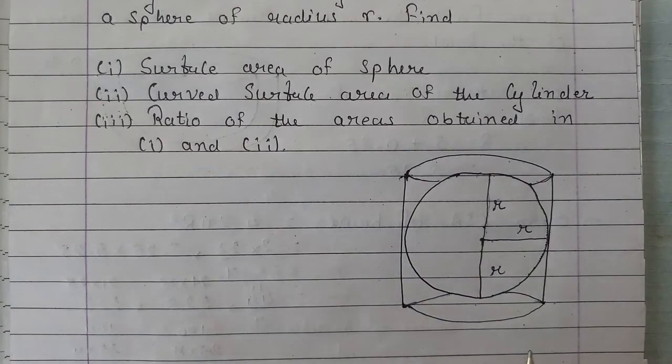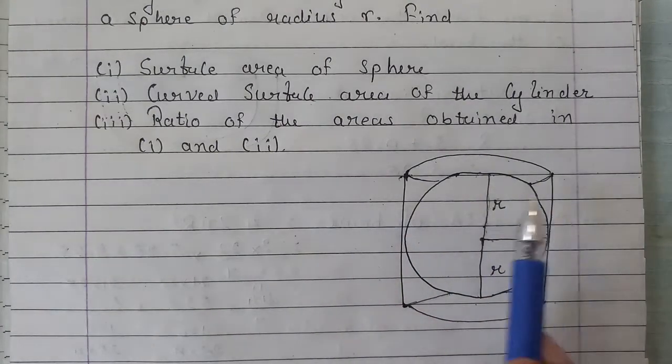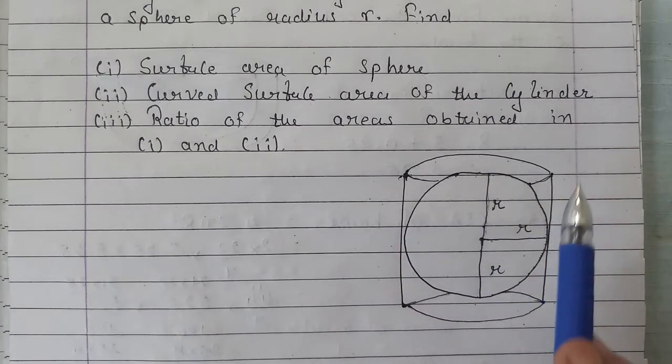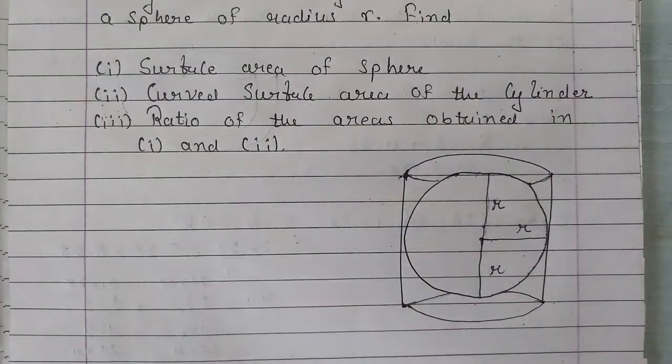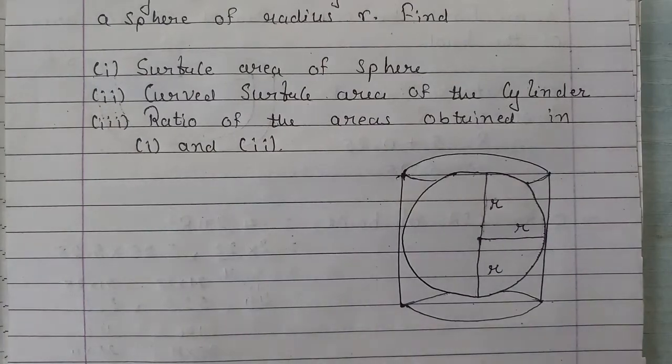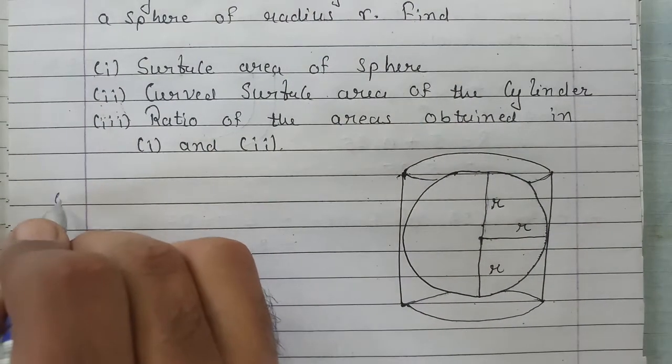We need to find: what is the surface area of the cylinder, what is the surface area of the sphere, and what is the ratio of both? That is what we need to find out. So first, we will find: